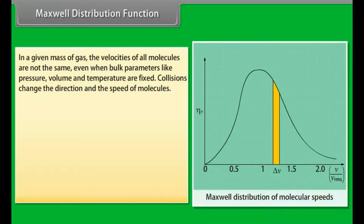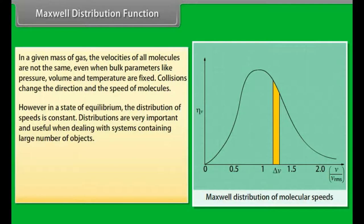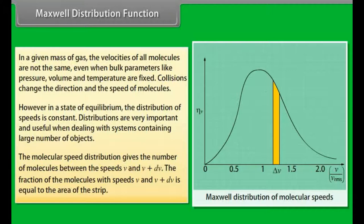In a given mass of gas, the velocities of all molecules are not the same even when bulk parameters like pressure, volume and temperature are fixed. Collisions change the direction and speed of molecules. However, in a state of equilibrium, the distribution of speed is constant. Distributions are very important and useful when dealing with systems containing large number of objects. The molecular speed distribution gives the number of molecules between the speeds V and V plus dV. The fraction of molecules with speeds V and V plus dV is equal to the area of the strip.